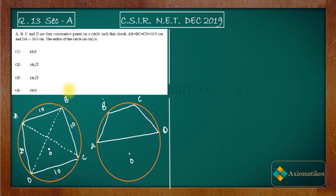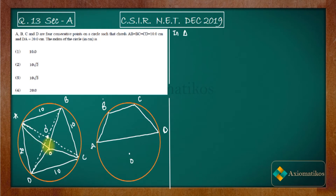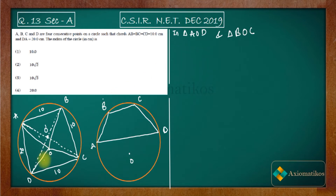Let me draw the figure properly. Here O is the center, and O-dash is the intersection of the diagonals. I draw lines connecting the vertices A, B, C, D to the center O. Now I will consider triangles AOB and DOC.